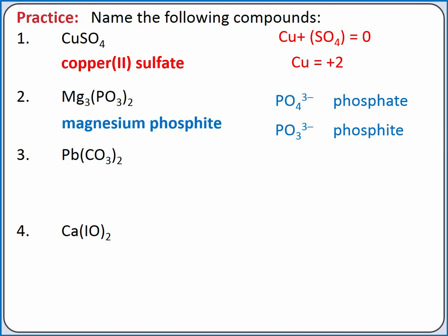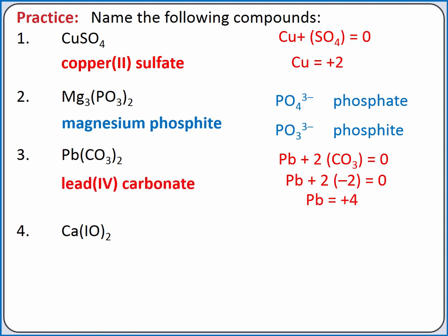For Pb(CO₃)₂, lead is a type 2 metal, so we need to determine its charge. We know our formula unit is overall electrically neutral, so the charge on 1 lead ion plus 2 times the charge of carbonate equals 0. The charge of carbonate is −2, so the charge on lead must be +4. Our compound is lead(IV) carbonate.